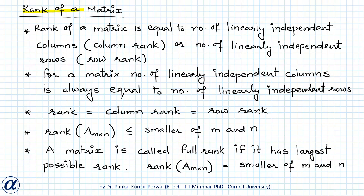In this lecture we will learn about rank of a matrix. Rank of a matrix is equal to the number of linearly independent columns or the number of linearly independent rows in the matrix. The number of linearly independent columns is also called the column rank of the matrix, and the number of linearly independent rows is also called the row rank of the matrix. For any matrix, the number of linearly independent columns is always equal to the number of linearly independent rows, so rank equals column rank equals row rank.